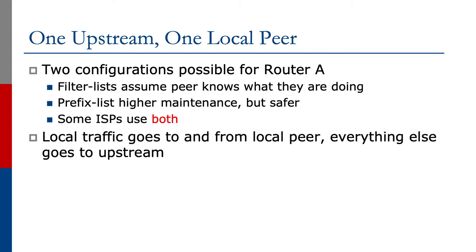The result of all this is that local traffic goes to and from the local peer, and everything else goes to the upstream. Should the link between you and the local peer go away, then the traffic will get a backup path through the upstream provider — a temporary situation until the local peering link is restored.